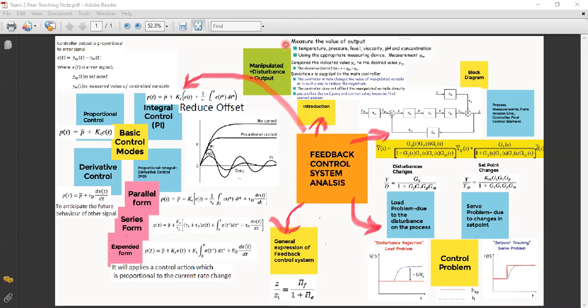The feedback control is used to measure the value of output, which is the temperature, pressure, level, viscosity, pH, and concentration using the appropriate measuring device. So we will use it for the measurement of YM. So this measure YM will be compared with the desired value, which is the YSP.